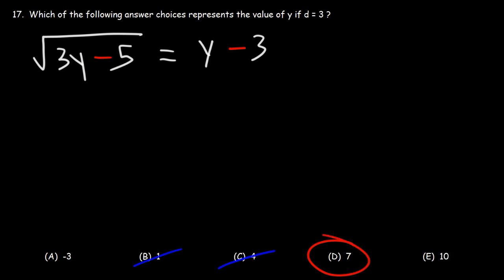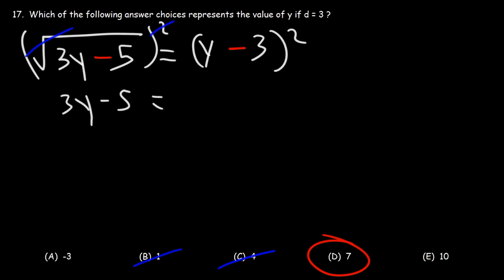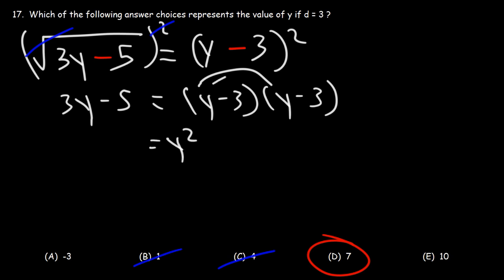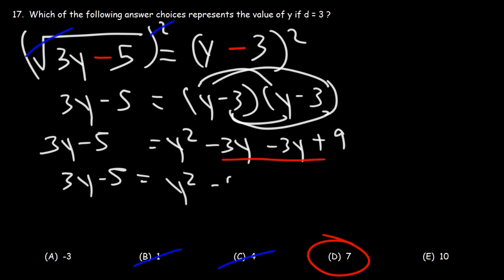Now we're going to show our work in case this was a free response problem, so we're actually going to solve it. We have a square root symbol on the left and no square root symbol on the right. Because we have a radical function on the left, we need to take the square of both sides to get rid of it. The square of the square root of 3y minus 5 is just 3y minus 5. On the right side, we need to FOIL y minus 3 squared. So y times y is y squared, y times negative 3 is negative 3y, and we have another negative 3y, and negative 3 times negative 3 is positive 9. Now let's combine like terms — negative 3y minus 3y is negative 6y.